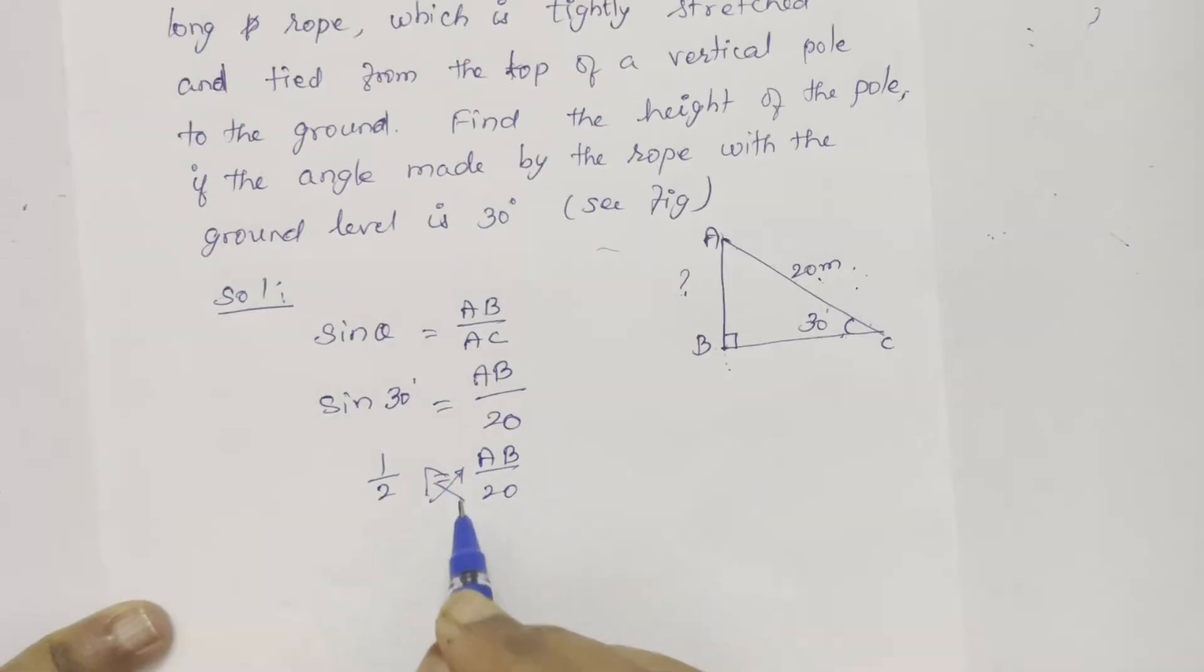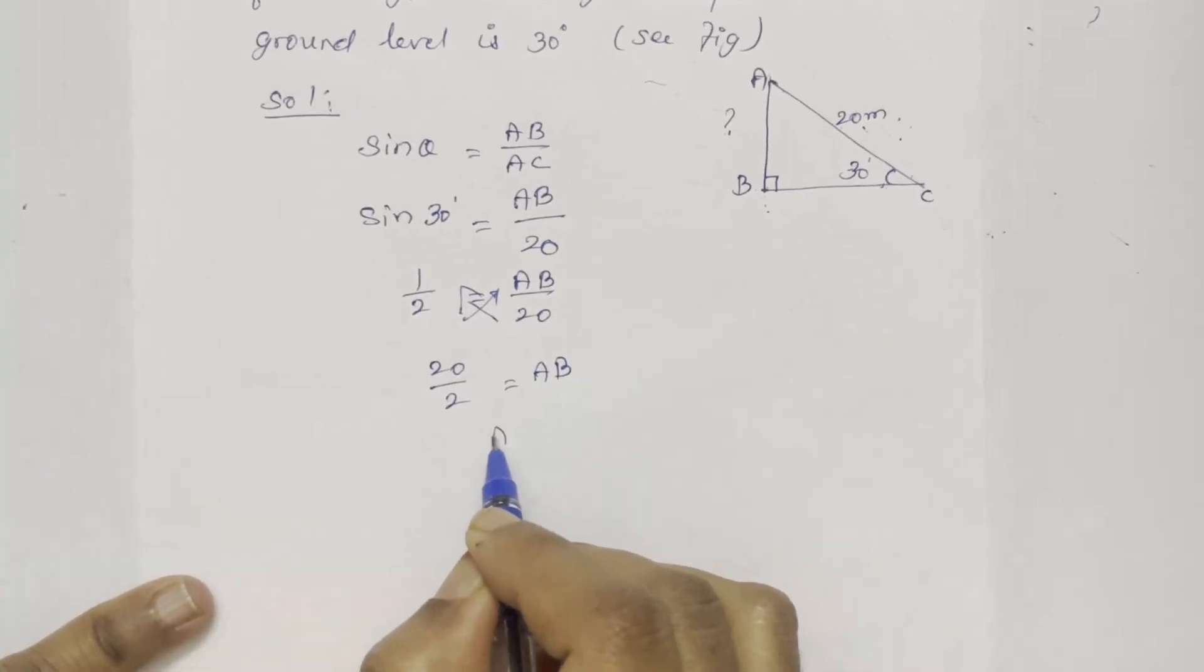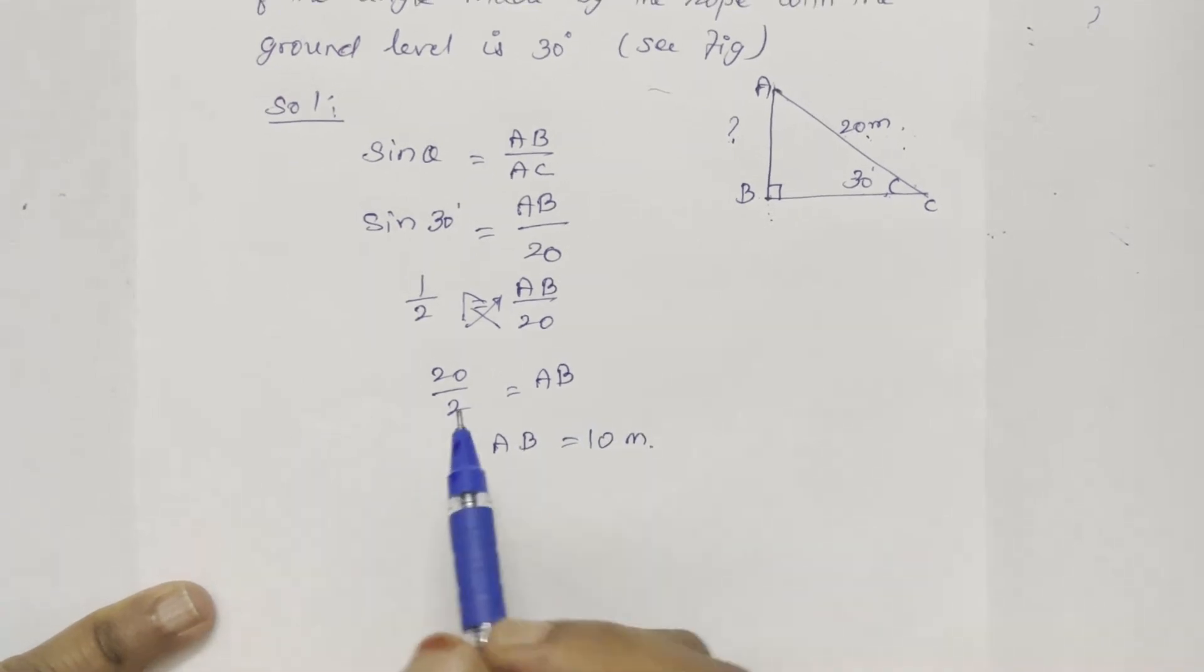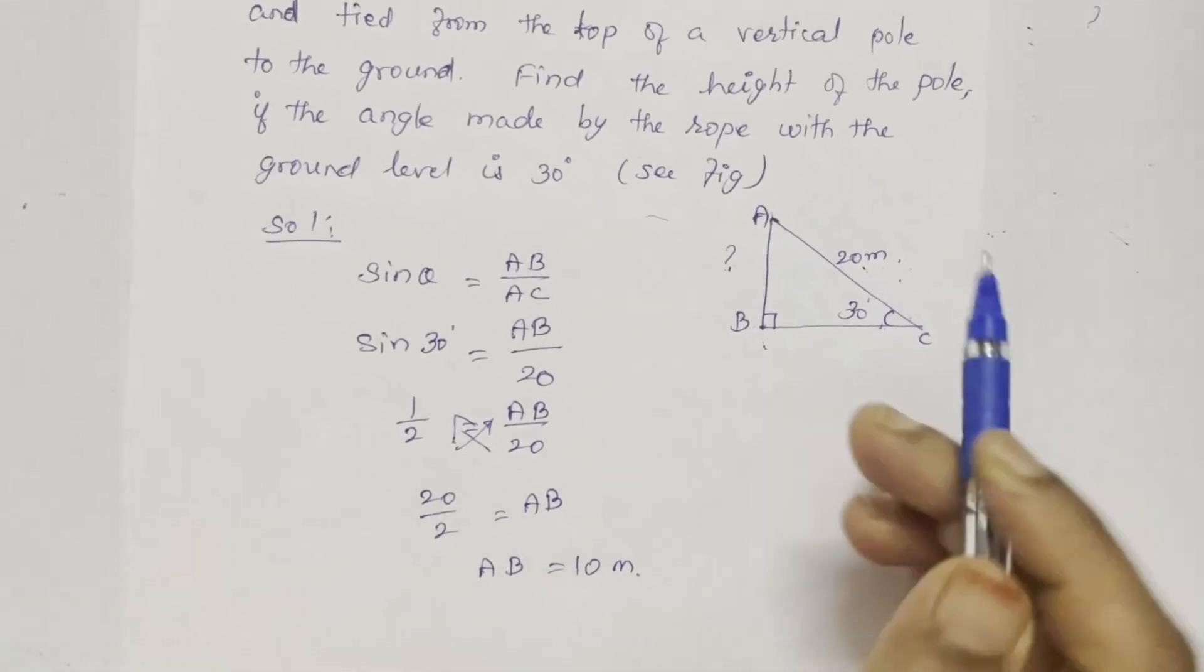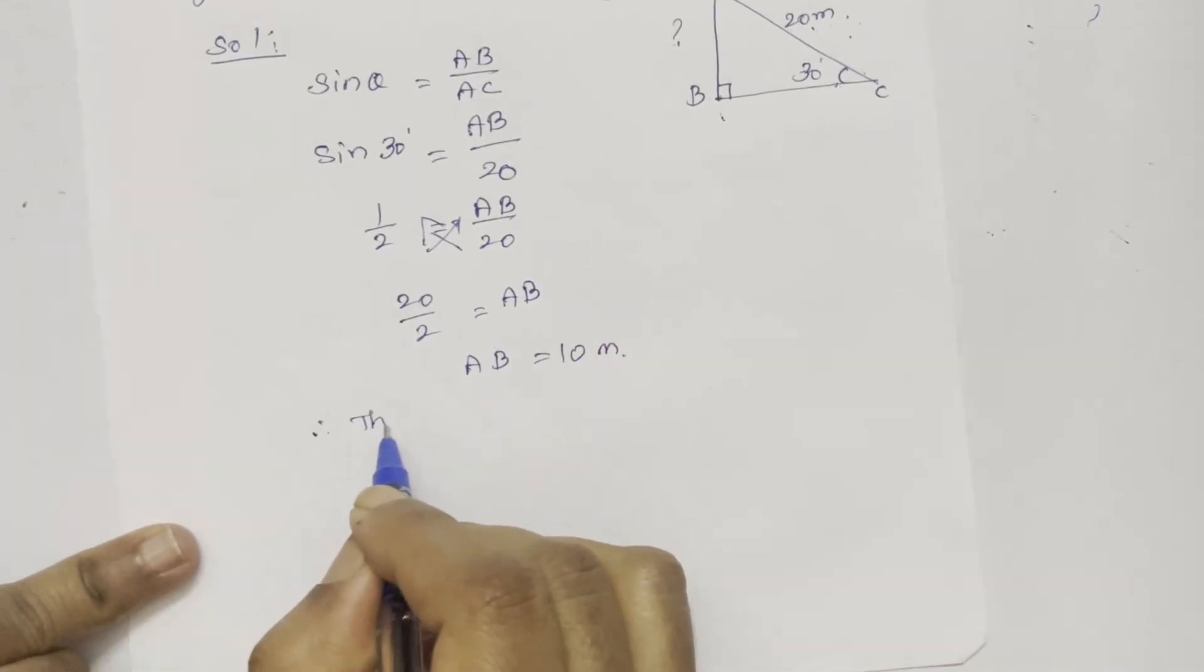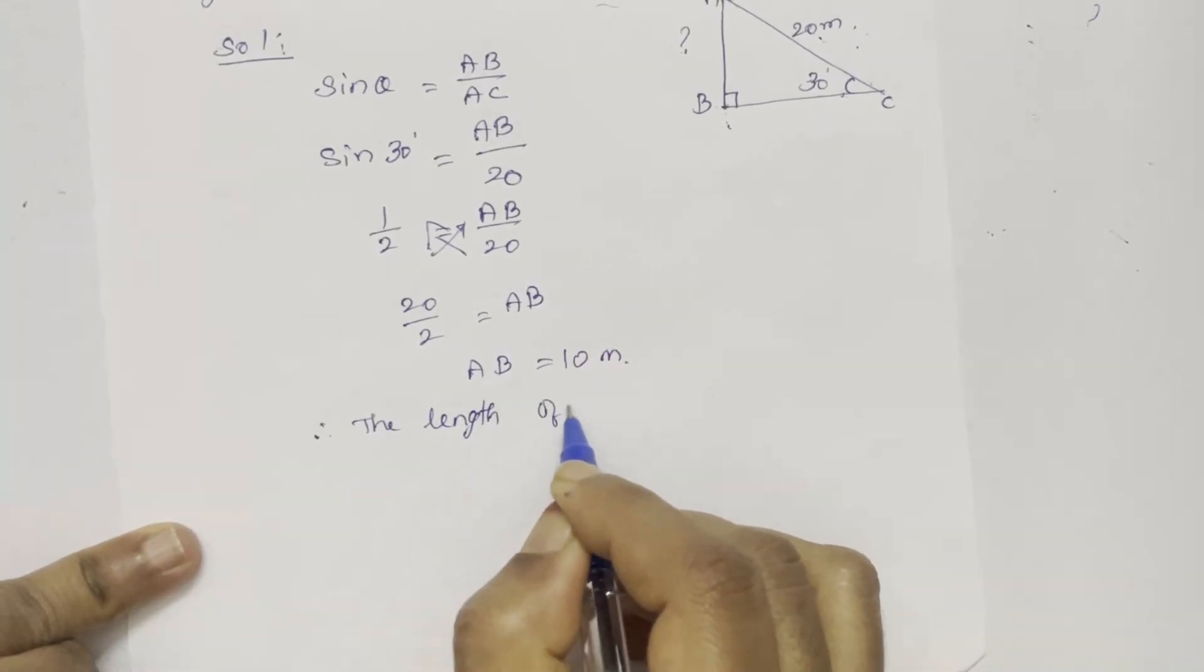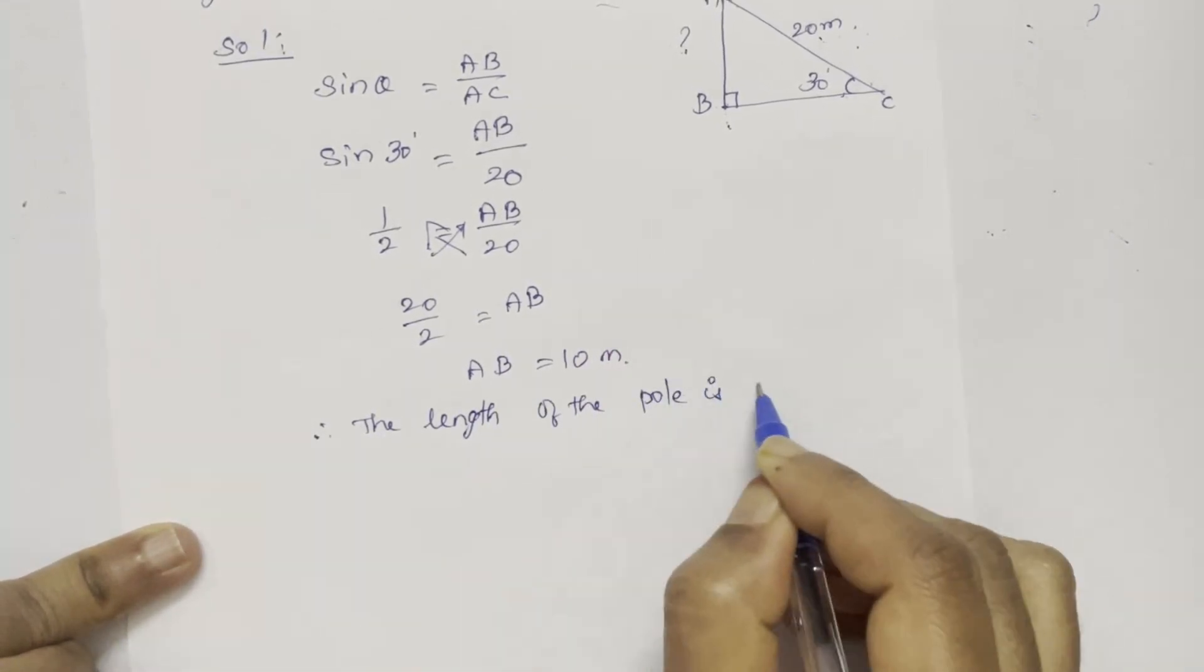Cross multiply, so 20 by 2 equals AB. So AB equals 10 meters. The length of the pole is 10 meters. Thank you.